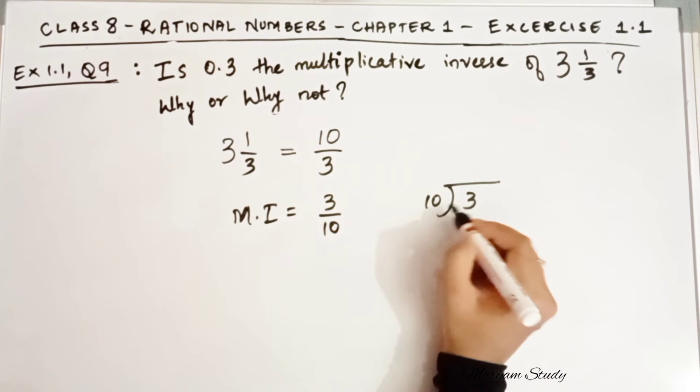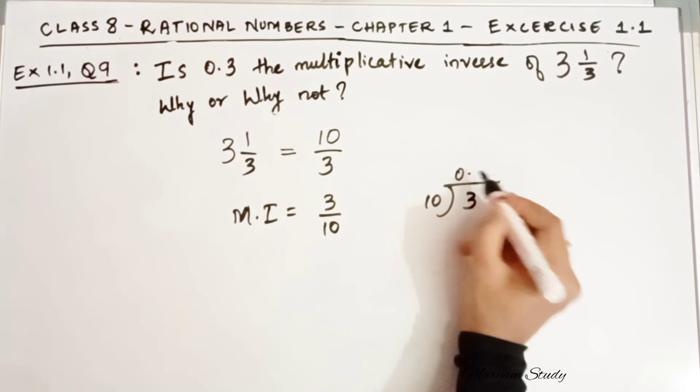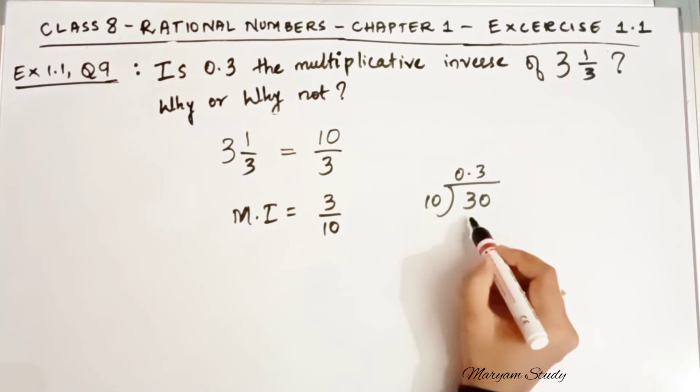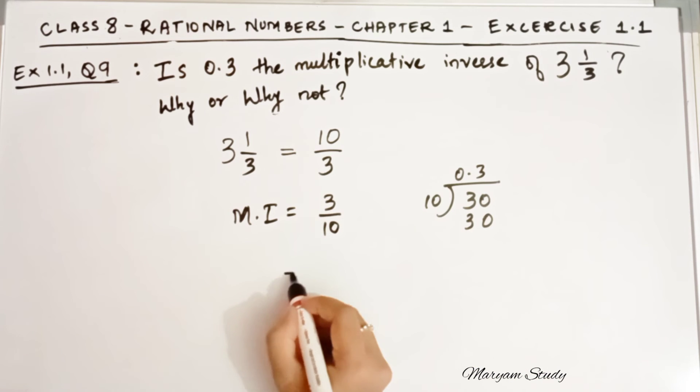10 3. 3 10 se chota hai. So we take 0 point here. So what is 3 by 10? It is 0.3.